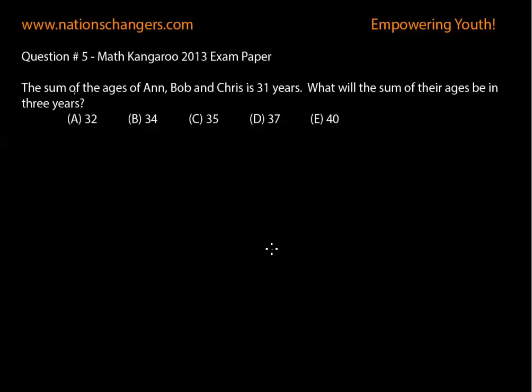The sum of the ages of Ann, Bob, and Chris is 31 years. What will be the sum of their ages in 3 years?